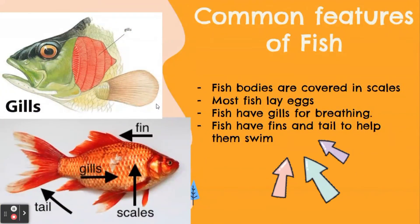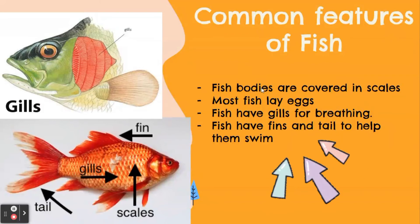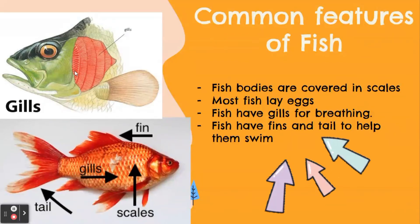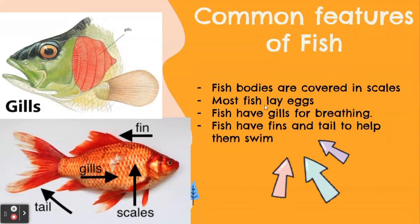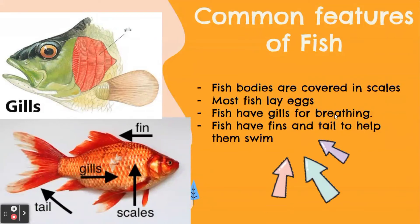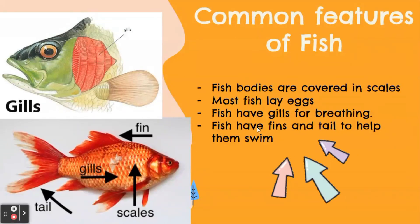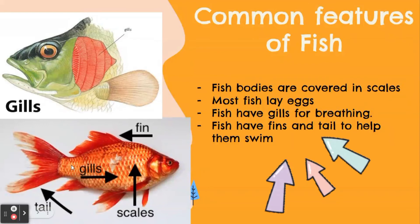Next, common features of fish. Fish bodies are covered in scales, as you can see in the picture. Most fish lay eggs. Fish have gills for breathing — here are the gills. Fish have fins and a tail to help them swim.